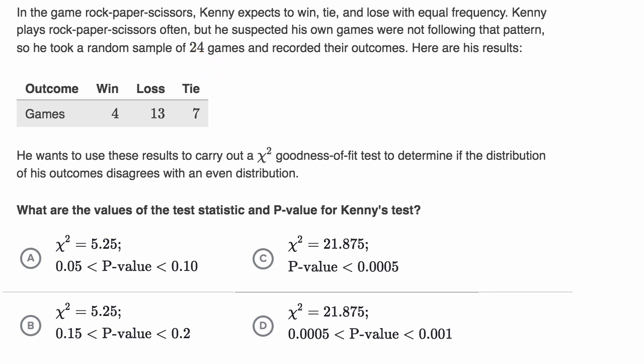So what would his null hypothesis be? Well, his null hypothesis would be that he has, that all of the outcomes are equal probability. Outcomes equal probability. And then his alternative hypothesis would be that his outcomes have not equal, not equal probability.